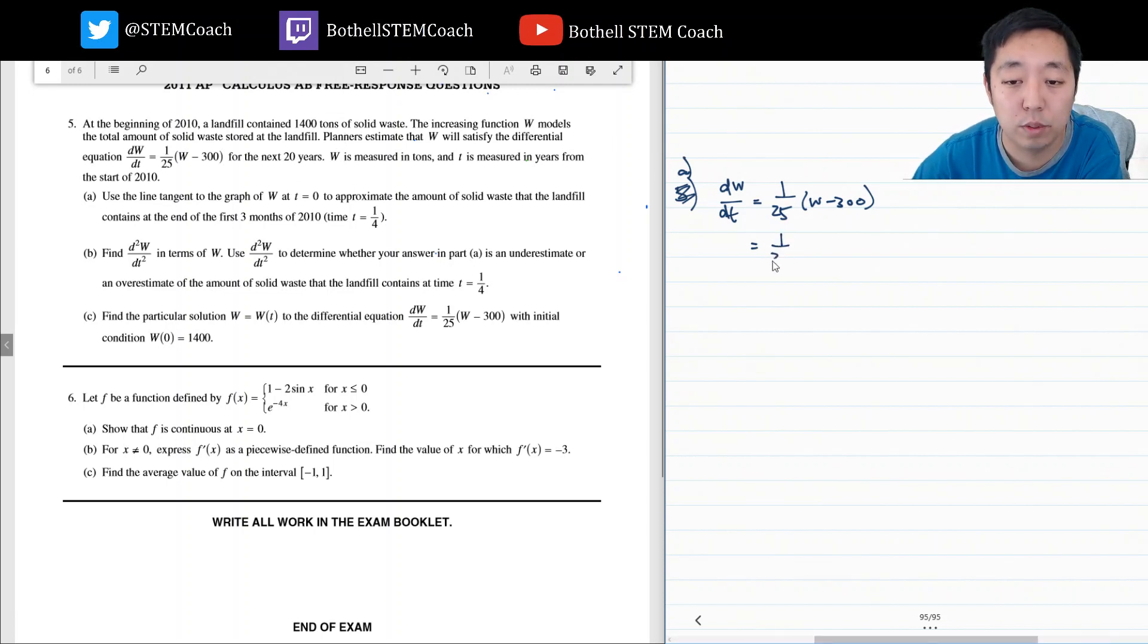So 1 over 25 times 1,400 minus 300 equals 1,100 divided by 25. What is that? That's 44. Okay, so that's the slope.